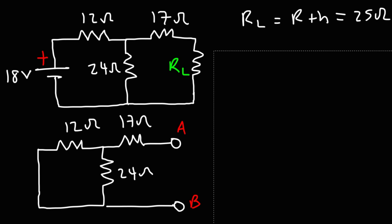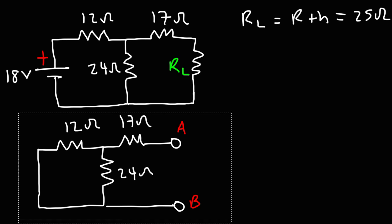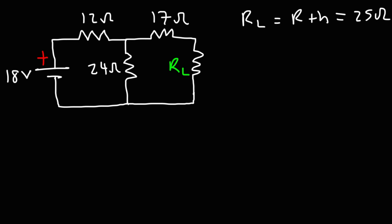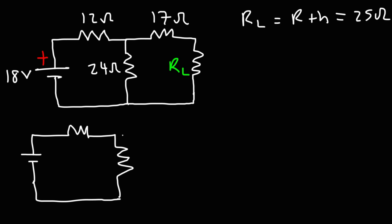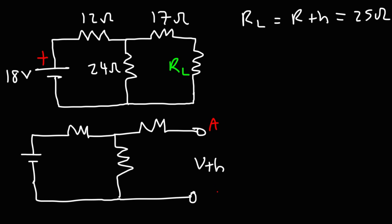8 plus 17 is 25. So the Thevenin resistance is 25 ohms. If we set the load resistance to 25 ohms, maximum power will be delivered from the source to the load resistance. Now, to calculate the maximum power, we need to calculate the Thevenin voltage. To do that, we're going to keep the source intact and remove the load resistance from the circuit. The Thevenin voltage is the voltage across the load resistor when it's not there — it's the voltage across points A and B.